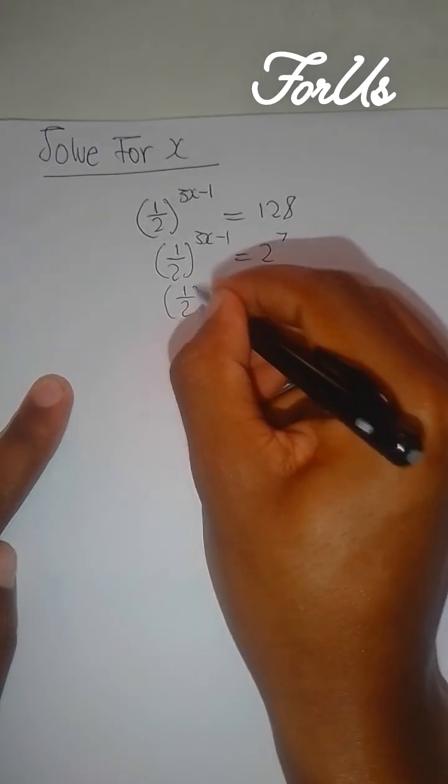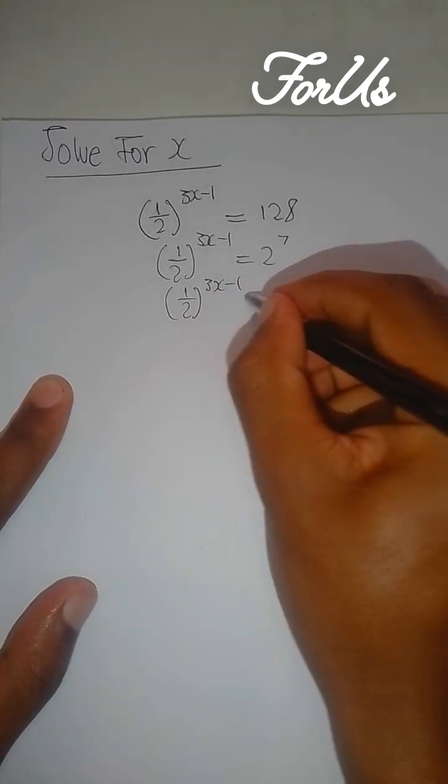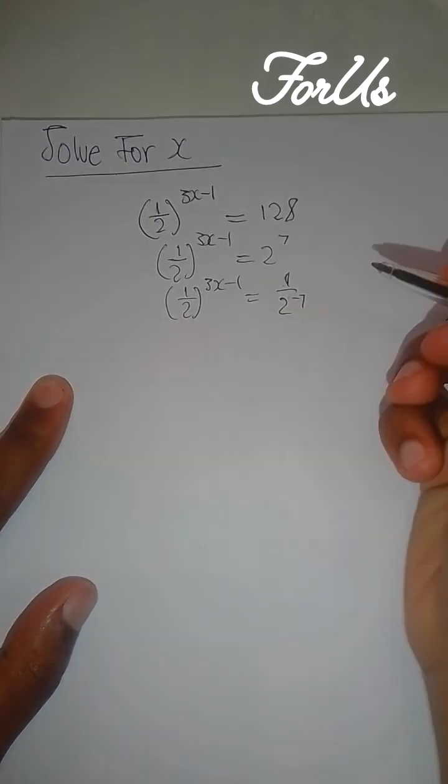And it's going to be one-half to the power of 3x minus 1, which is the same thing as 2 to the negative 7.